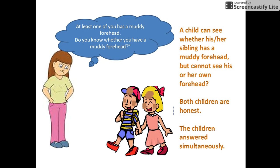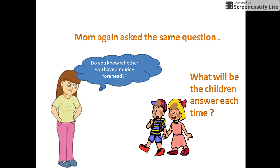Also assume that both children are honest and they answer the question simultaneously. The mother asks the question twice. So, what will be the children's answer to the question asked by the mother each time?